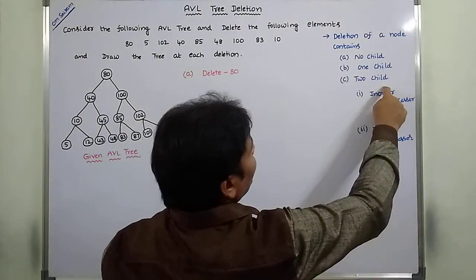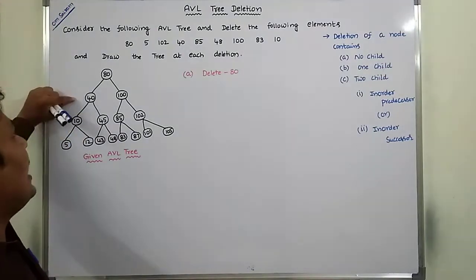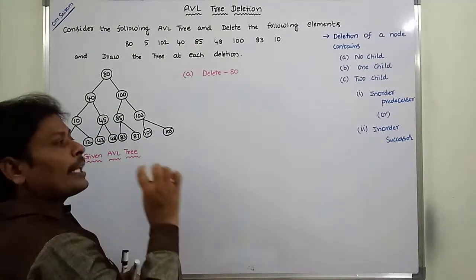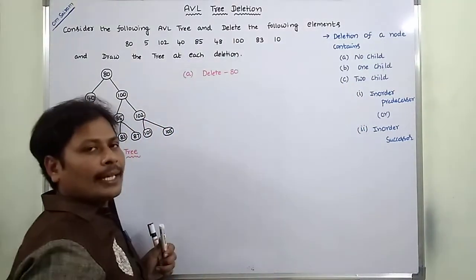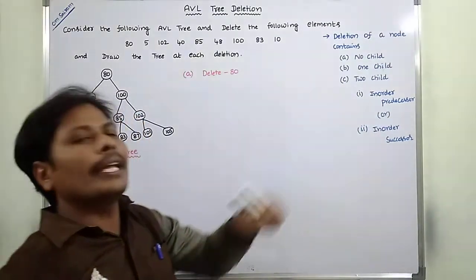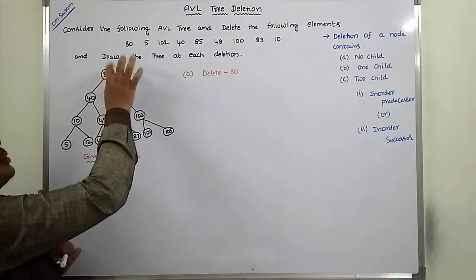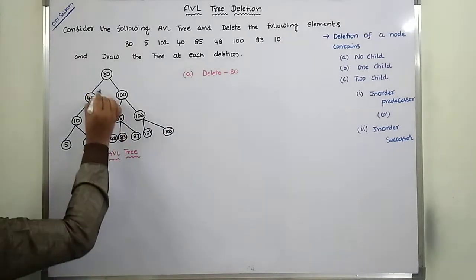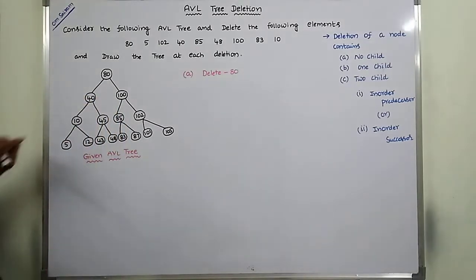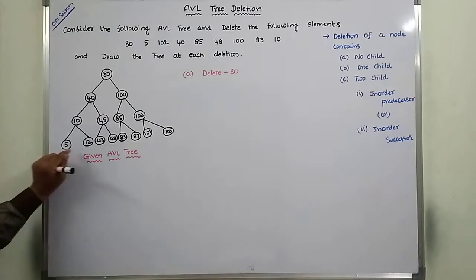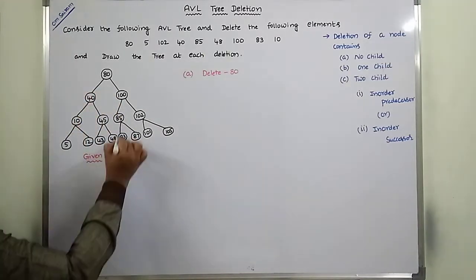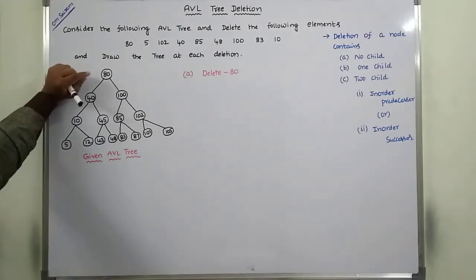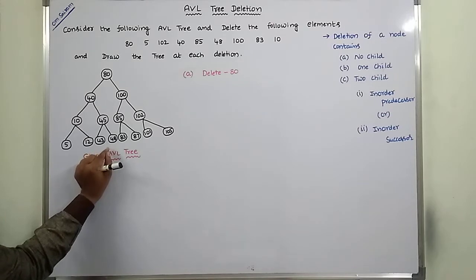Since the deleted node 80 has two children, it can be replaced with either the in-order predecessor or in-order successor. I am considering the in-order predecessor. The in-order predecessor of node 80 is the maximum element in the left subtree. The elements in the left subtree are 40, 10, 45, 5, 12, 43, and 48. Among all these elements, 48 is the maximum. So we have to replace 80 with 48.